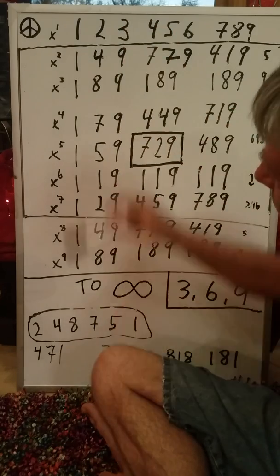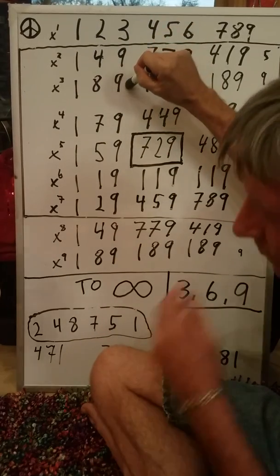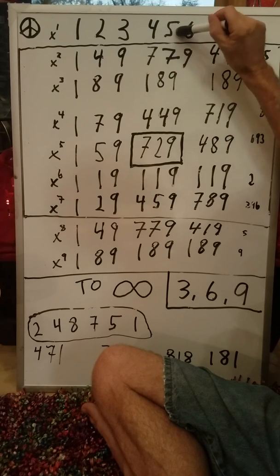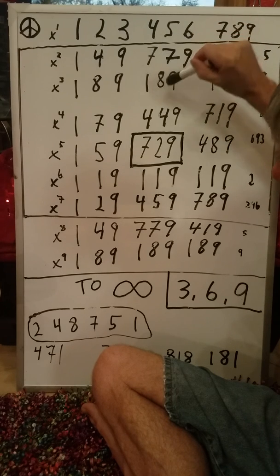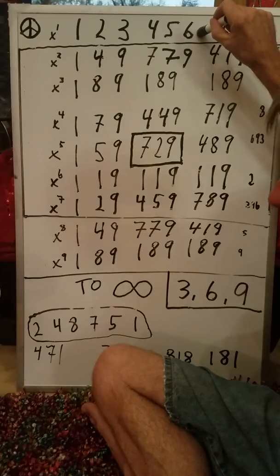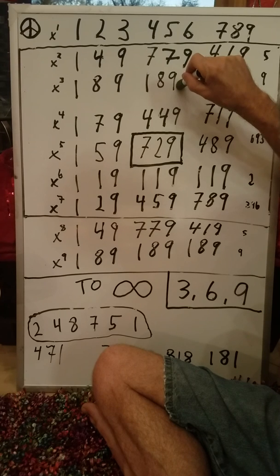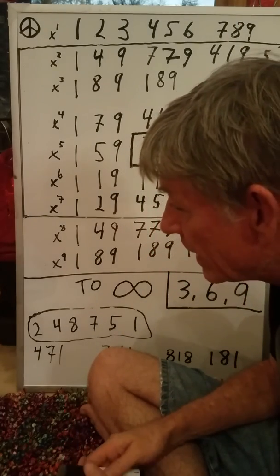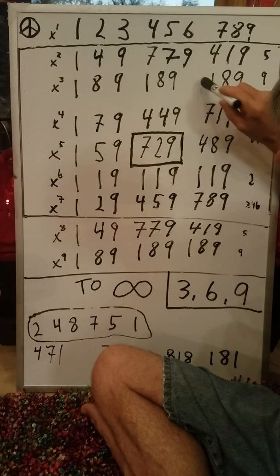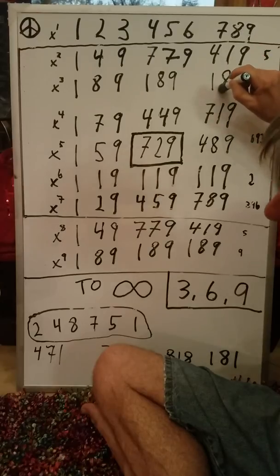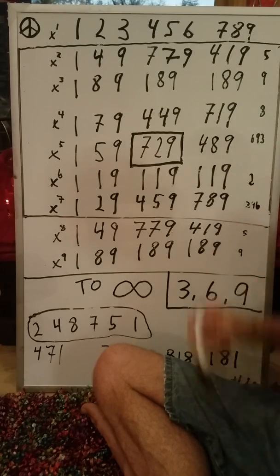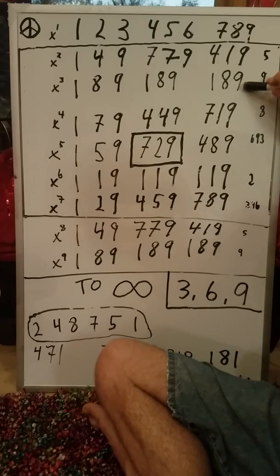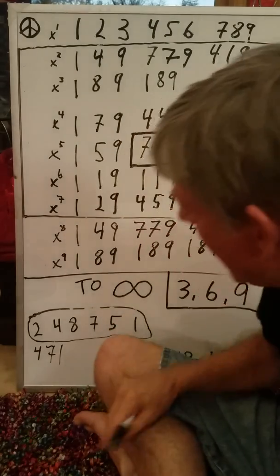Now let's do the cubing, just to illustrate that. 1 cubed is 1. 2 cubed is 8. 3 cubed: 3×3=9, ×3=27, and 2+7=9. 4 cubed: 4×4=16, ×4=64, and 6+4=10, which is 1. 5 cubed: 5×5=25, ×5=125, and 1+2+5=8. 6 cubed: 6×6=36, ×6=216, and 2+1+6=9. 7 cubed: 7×7=49, ×7=343, and 3+4+3=10, which is 1. 8 cubed: 8×8=64, ×8=512, and 5+1+2=8. 9 cubed: 9×9=81, ×9=729, and 7+2+9=18, 1+8=9. You can take any number — once again it goes to infinity.